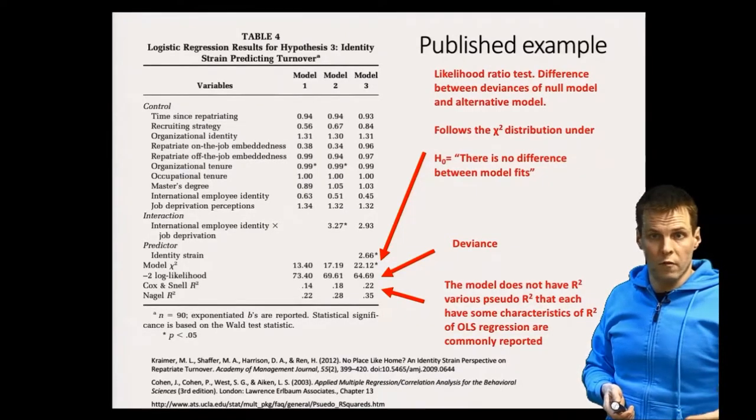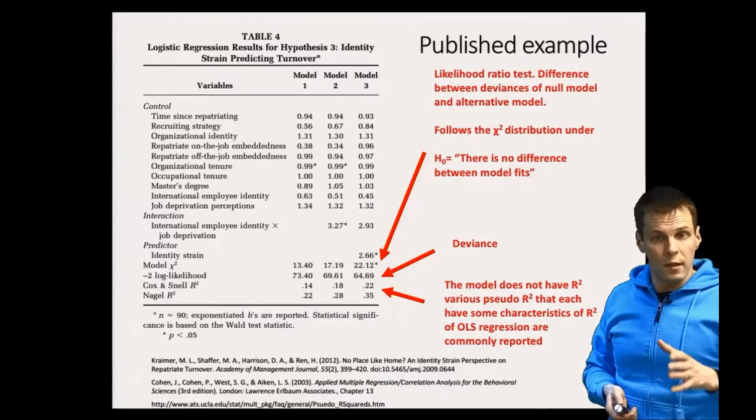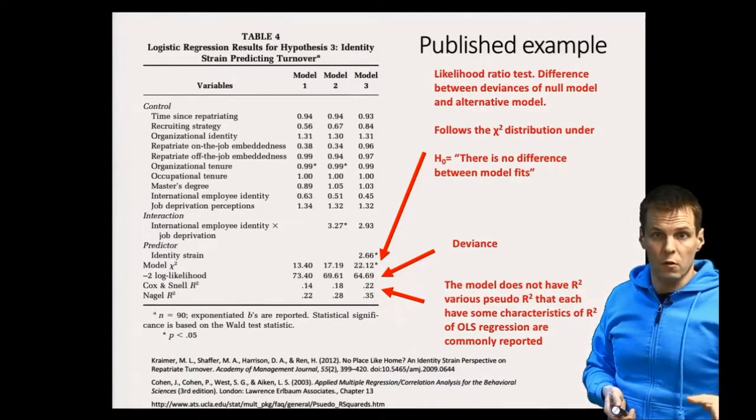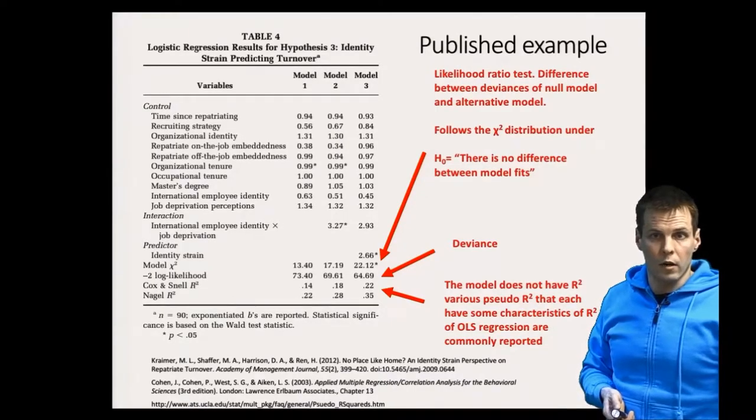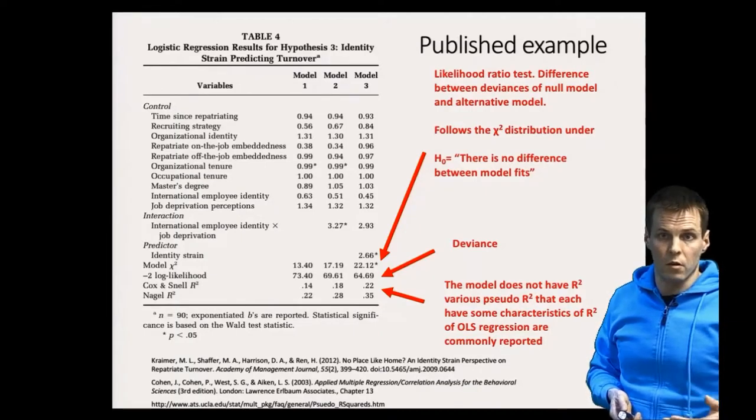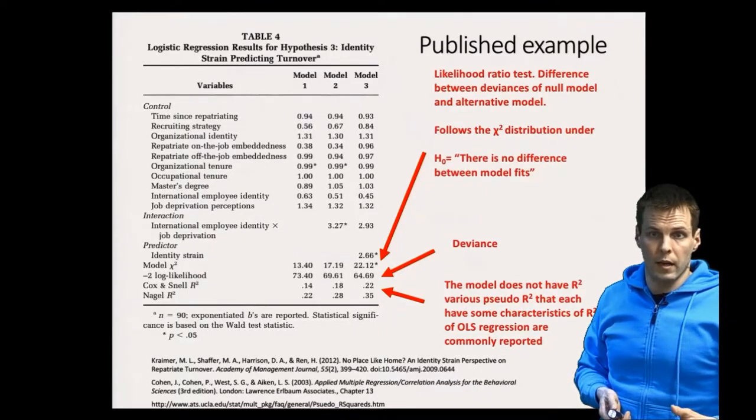So different pseudo r-square values give you different aspects of the r-square. It could be one pseudo r-square could be the correlation between the predicted value and the actual value. Another one could tell you how much variation of the data the model explains and so on.